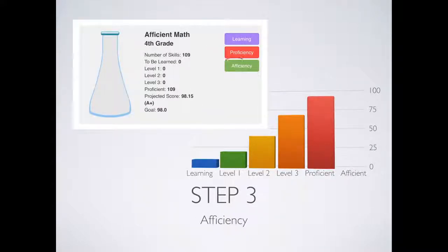Step three is called efficiency. This is where you must bring your current score, which is based on your speed and accuracy, up to the goal of that grade.